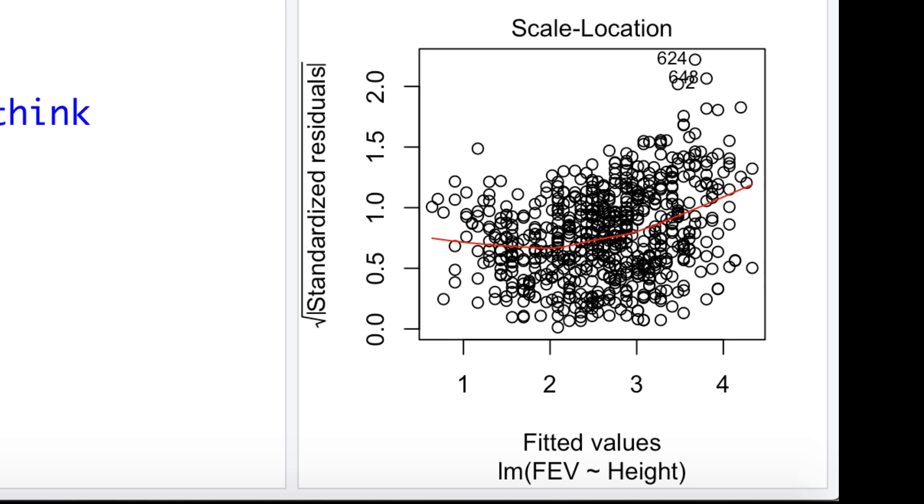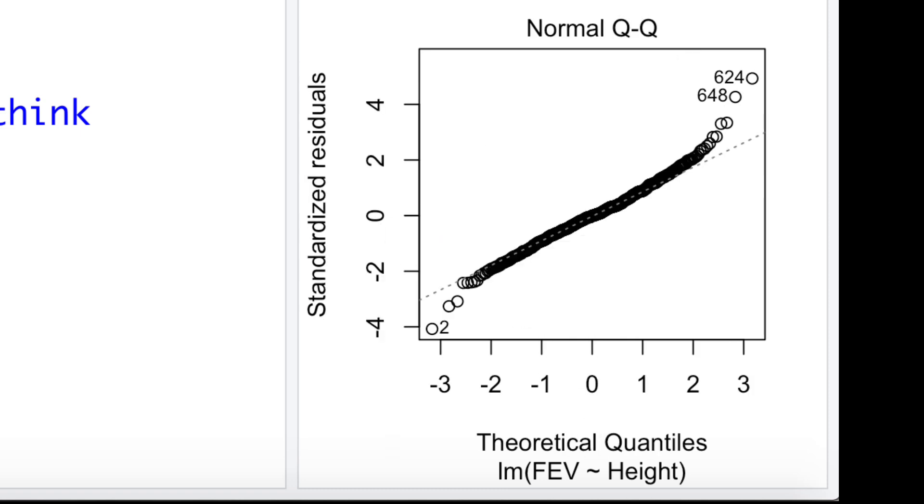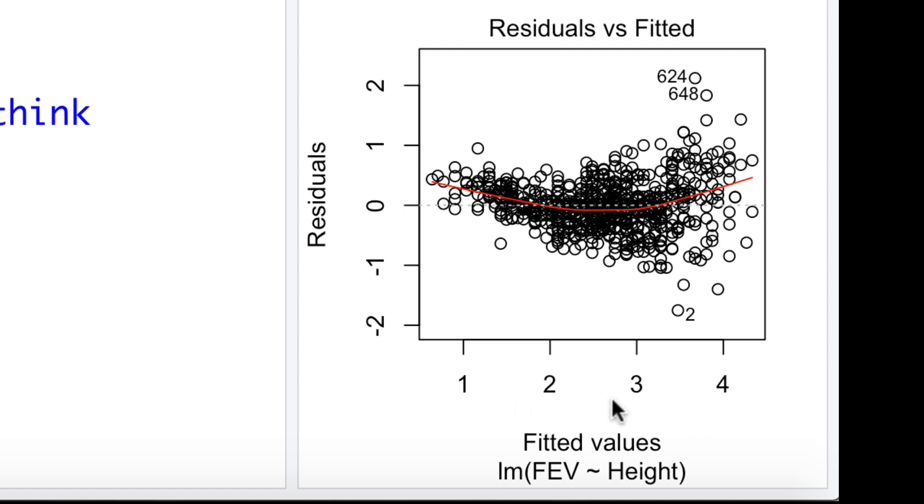Now this here, the scale-location plot, is very similar to the residual plot we were looking at previously. We can notice here on the Y-axis the absolute value—it's kind of hard to see there—but the absolute value of the standardized residuals and then the square root of that, and along here there's the fitted values. So let's take a look at the residual plot we were previously looking at. Here was the fitted values versus the residuals.